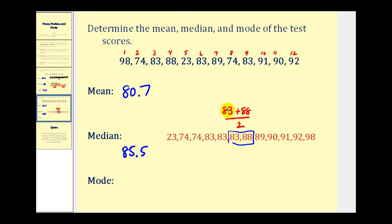Now let's determine the mode. Again, it's often helpful to determine the mode when the data is in order from least to greatest. We have two 74s, and notice we have three 83s. Since 83 occurs more often than 74, we only have one mode this time — the mode is 83.